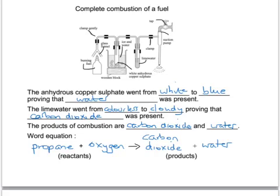At a higher level, though, you'd be expected to write a balanced symbol equation given, for example, the formula of propane, which is C3H8. You'd start by writing the formulas of each of the reactants and the products and then you'd need to balance the equation.